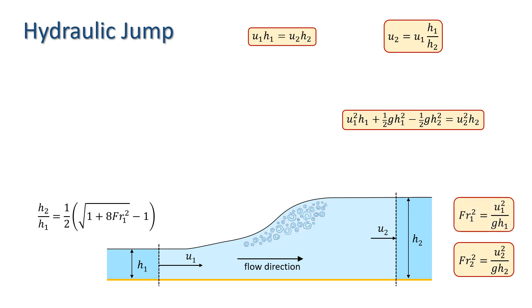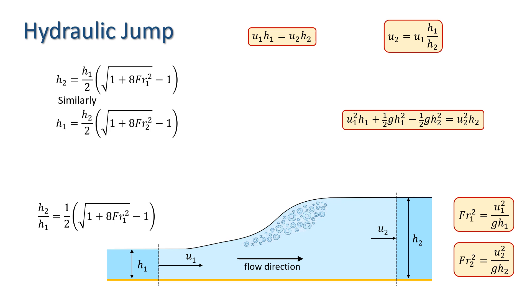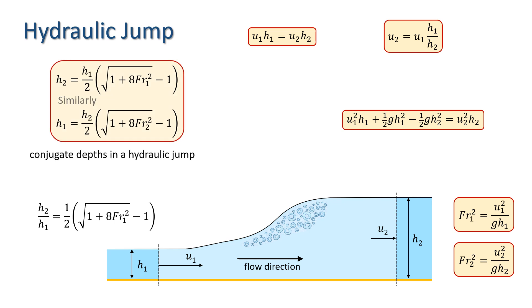Substituting back for x and a and multiplying both sides by H1 gives: H2 equals (H1/2) times (the square root of 1 plus 8·Fr1² minus 1). With some manipulation we can also generate the result: H1 equals (H2/2) times (the square root of 1 plus 8·Fr2² minus 1). We thus have expressions for calculating conjugate depths in a hydraulic jump, in which one depth can be calculated entirely based on the depth and velocity at its conjugate.